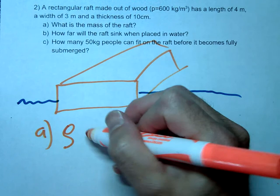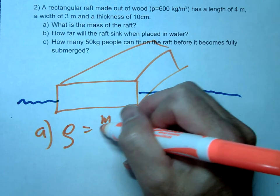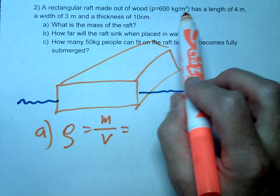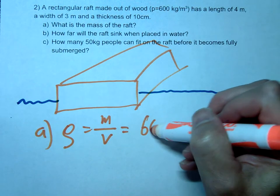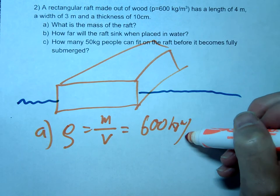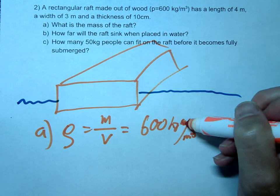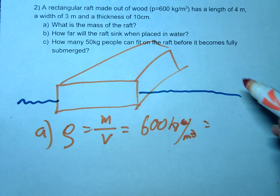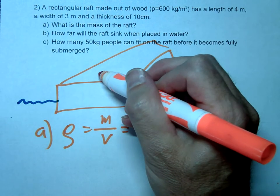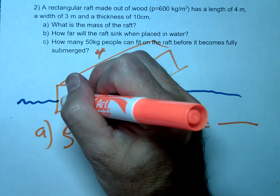So the first question is how do we find the mass of the raft? For that we'll simply just use our density equation, right? So density equals mass over volume. The density of the wood was 600 kilograms per meter cubed and then the volume, well this was 3 by 4 by 10 centimeters or 0.1 meters.